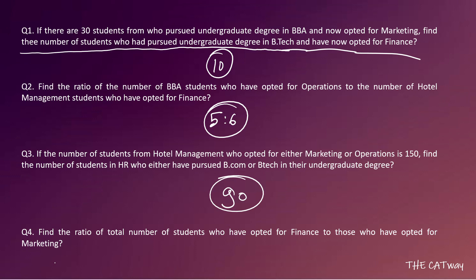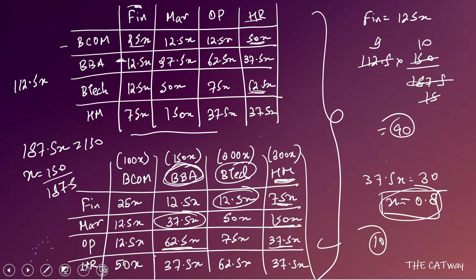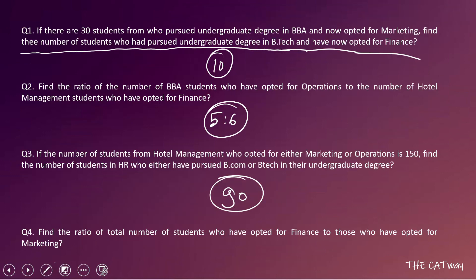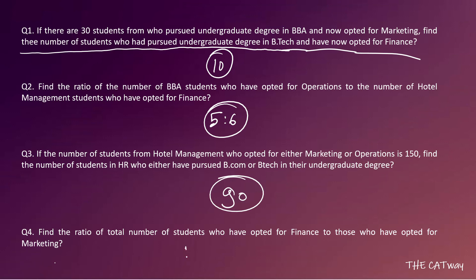Question 4: Find the ratio of total students who opted for Finance to those who opted for Marketing. Finance total = 125x. Marketing total = 12.5x + 37.5x + 50x + 150x = 250x. Ratio = 125x : 250x = 1:2. With this, the set is complete.